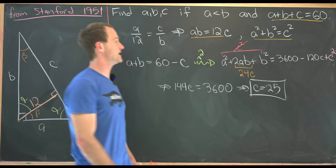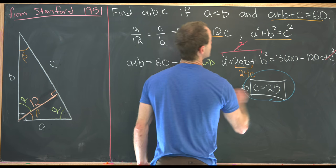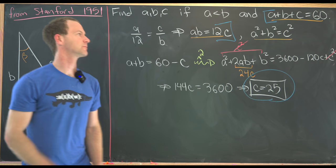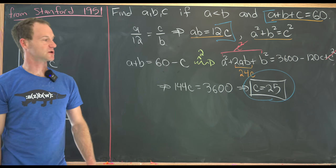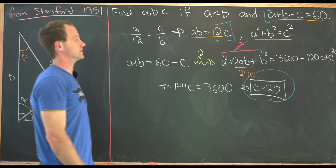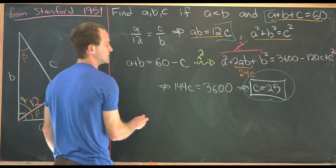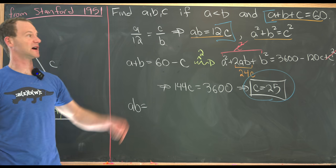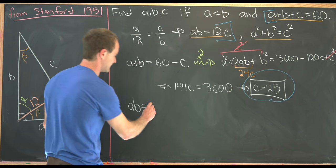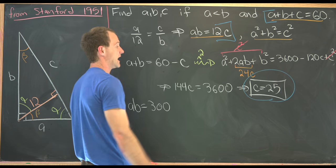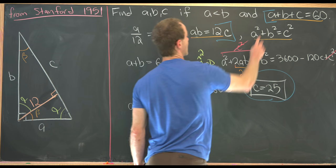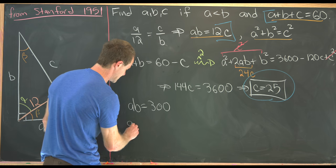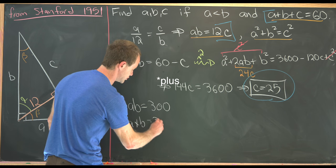Now we'll plug this value of C into maybe this equation right here and this equation right here, and we can use that to solve for A and B. So let's get to it. So plugged into this equation right here, we see that A times B is equal to 25 times 12. 25 times 12 is 300. And then plugging C equals 25 up here and moving the 25 to the other side of the equation, we see that A plus B is equal to 35.